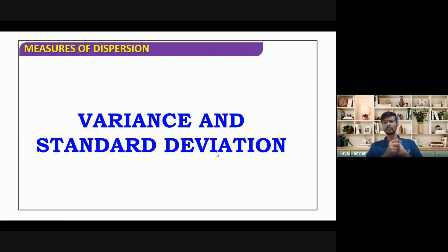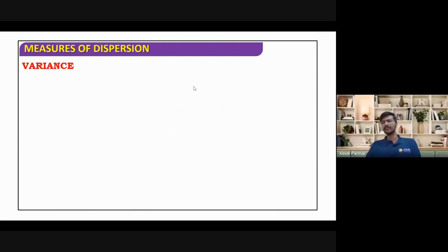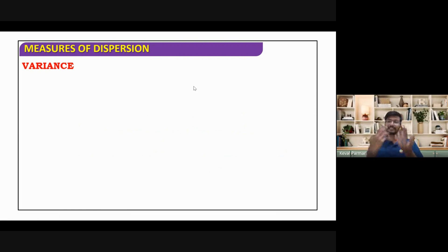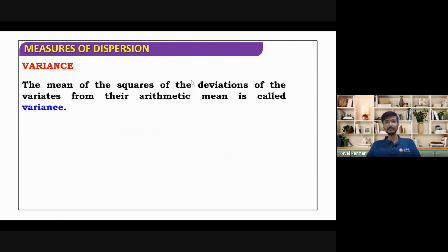Let's get started. Variance and standard deviation. Variance — there is not much difference in variance and standard deviation. Standard deviation is just the square root of variance. So we need to study variance. What is variance? The mean of the squares of the deviations from the arithmetic mean is called variance. This might sound very confusing, but let's break it into parts.